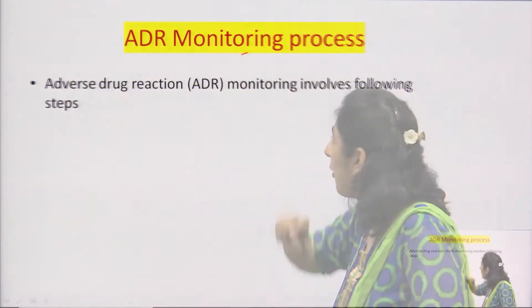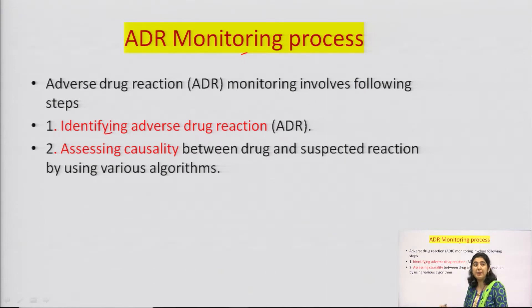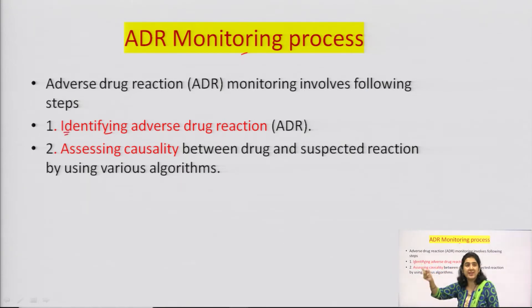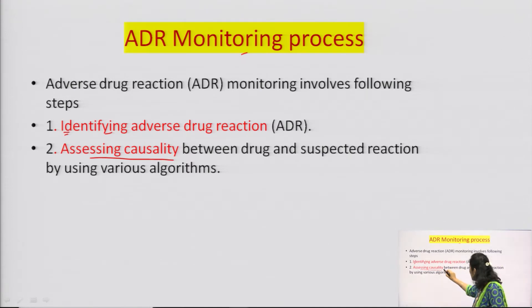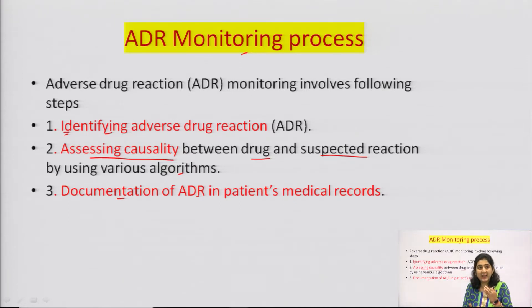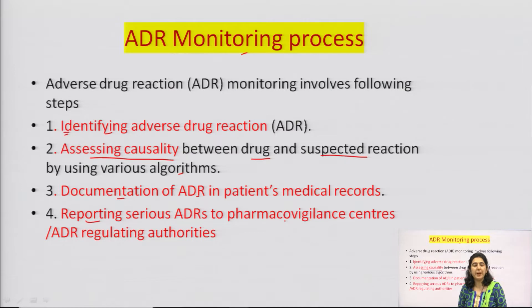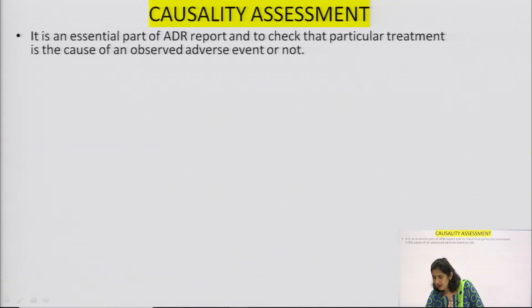First, let us see what the ADR monitoring process is. ADR monitoring involves the following steps: first, identifying adverse drug reactions — in my last lecture I explained how ADRs are detected and identified. The next step is assessing causality between drug and suspected reaction using various algorithms, which we are going to study now. Third is documentation of ADR in patients' medical records, followed by reporting serious ADRs to pharmacovigilance centres or regulatory authorities.